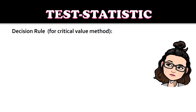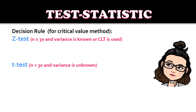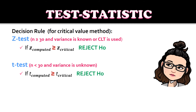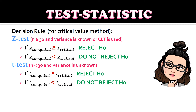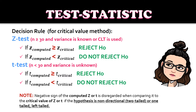For the decision rule, which applies to both Z-test and T-test: if the computed value is greater than or equal to the critical value, we reject the null hypothesis. If the computed value is less than the critical value, we do not reject the null hypothesis. Take note that the negative sign of the computed Z or T is disregarded when comparing it to the critical value if the hypothesis is non-directional — that is, two-tailed or one-tailed on the left side — since the left side of the normal distribution contains negative values.